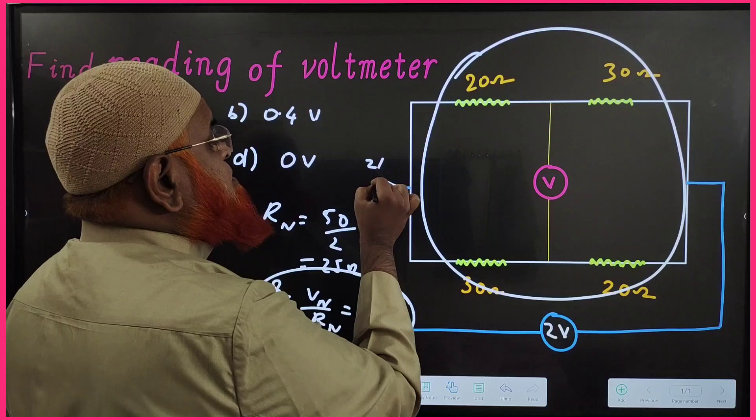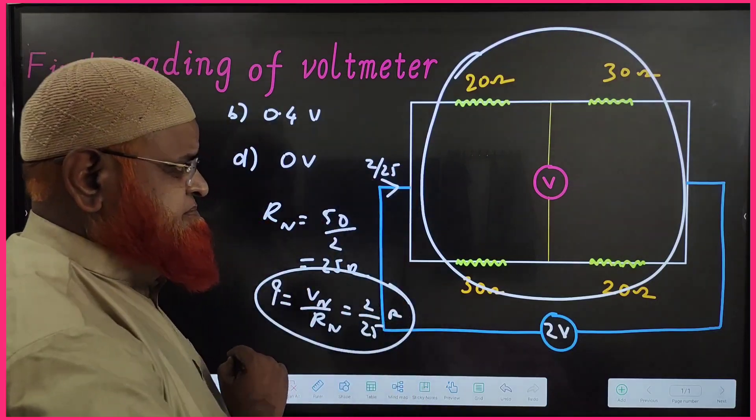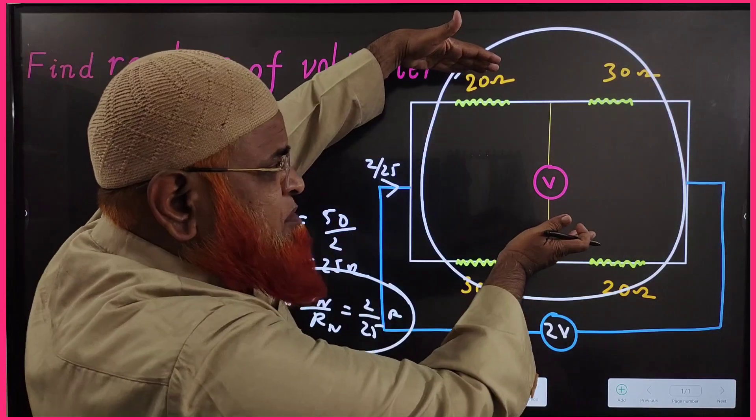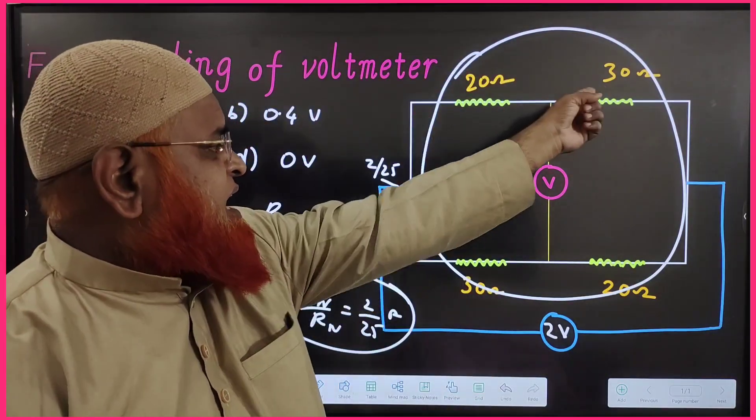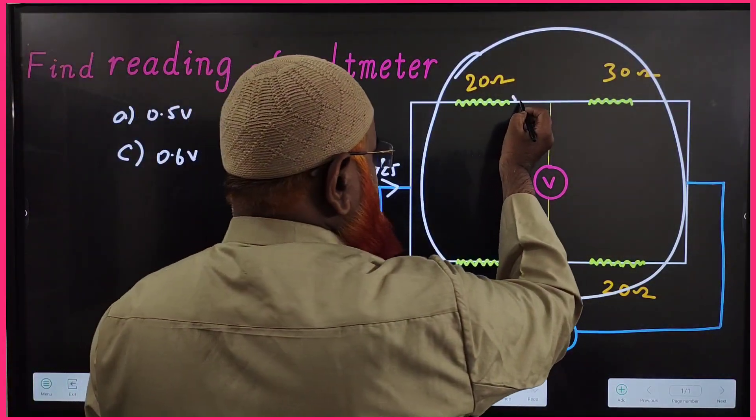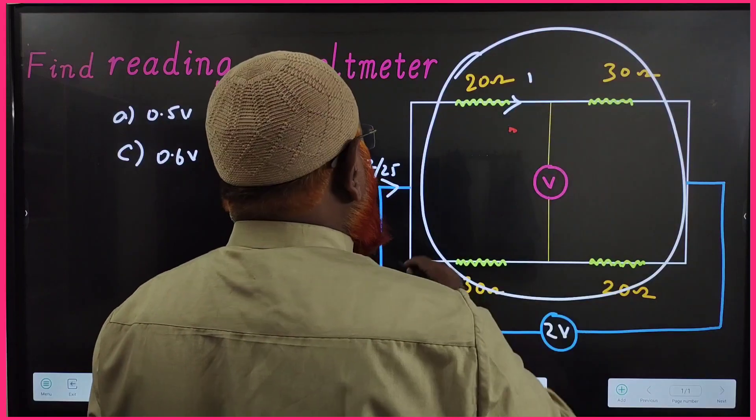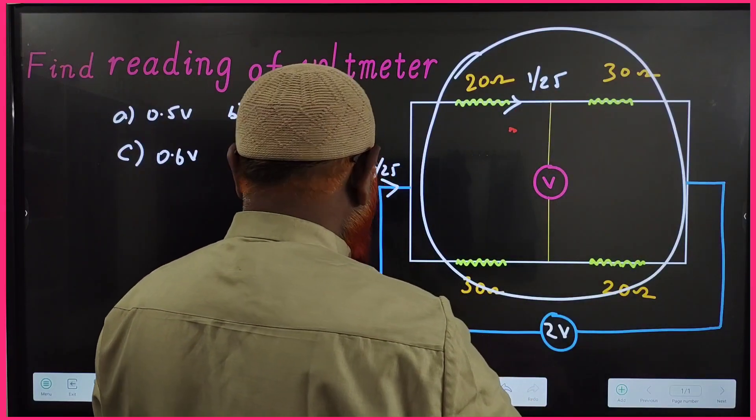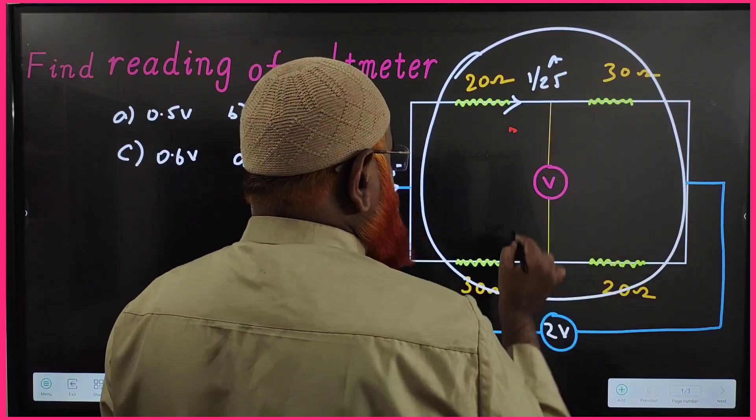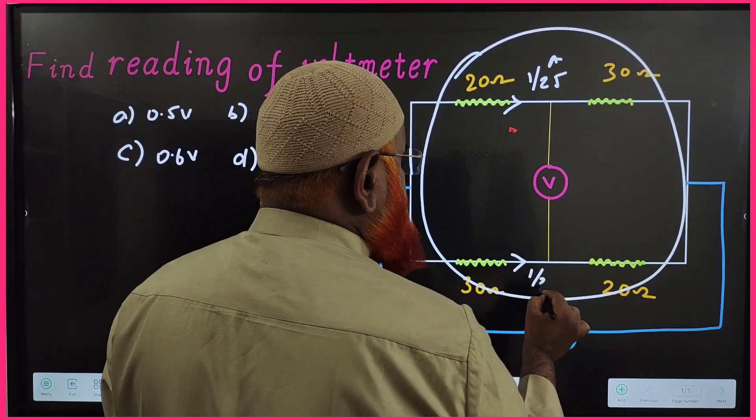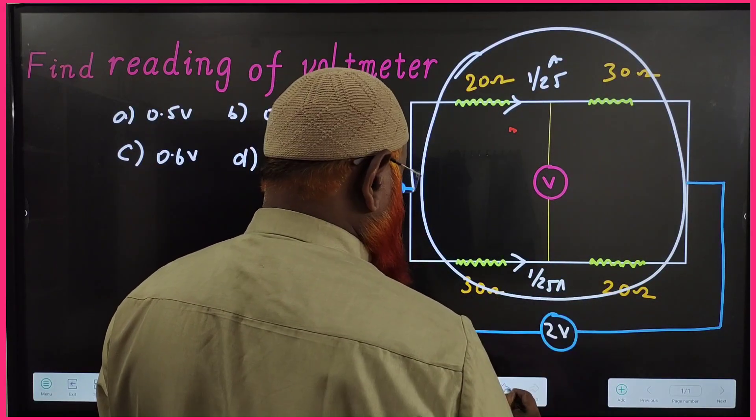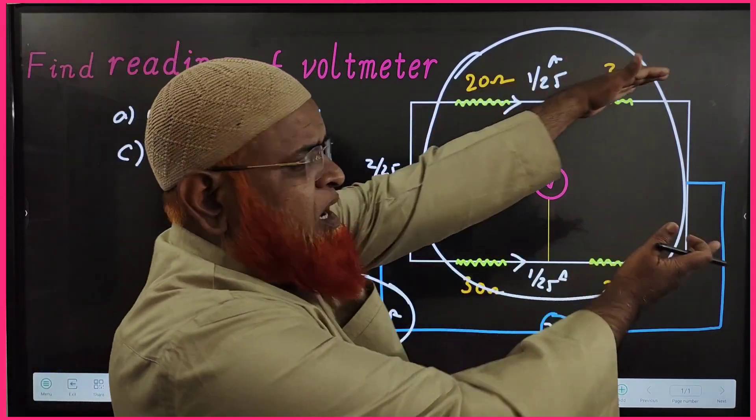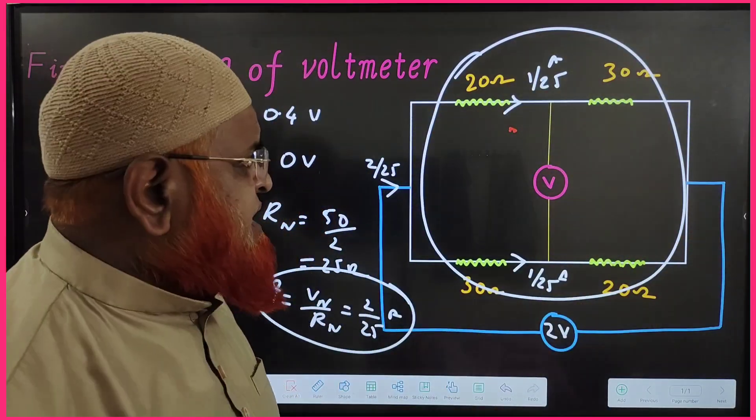This current gets equally divided among these two. Here how much has to flow? It has to flow 1 by 25 amperes. Here how much? Here also 1 by 25 amperes, because 2 by 25 gets divided equally.